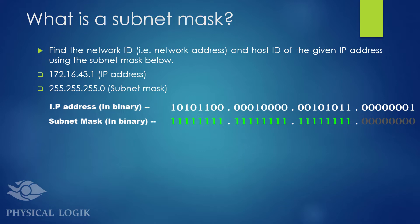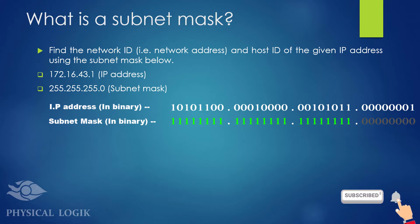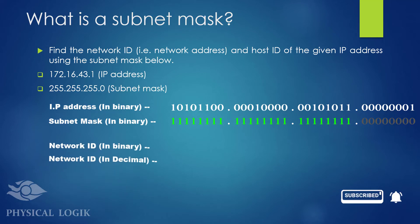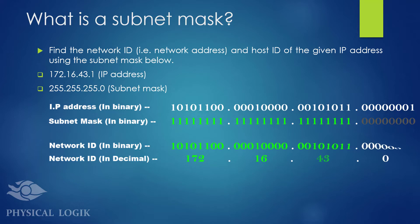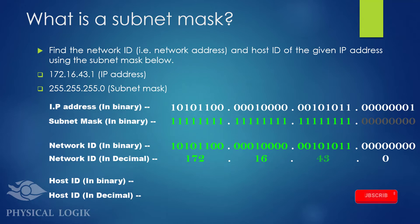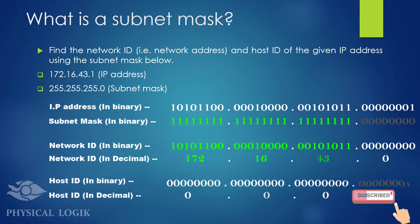The length of the 1s tells us the portion of our IP address that carries the network ID, and the others describe the host ID portion, which corresponds to the position of 0s in the subnet mask. Therefore, the network ID for the given IP address and subnet mask is 172.16.43.0, and the host ID is 0.0.0.1, or just 1 when converted to decimal.